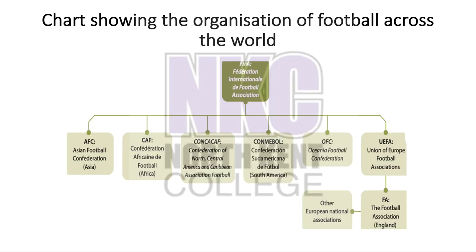Here's an example using FIFA. The chart shows the organisation of football across the world, with FIFA at the top. Underneath are bodies like the Asian Football Confederation and UEFA — the Union of European Football. Below those you have the national level, including the FA, the English Football Association. So you can see the international level, then large regional bodies such as Europe, Asia and Africa, then the national governing bodies, and below those the regional governing bodies.